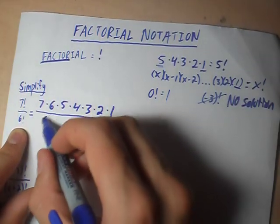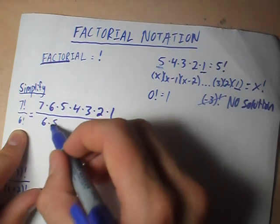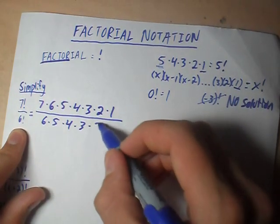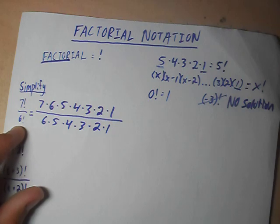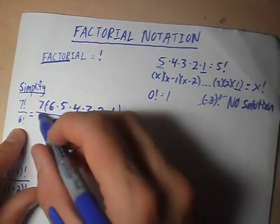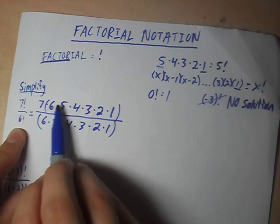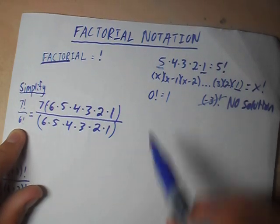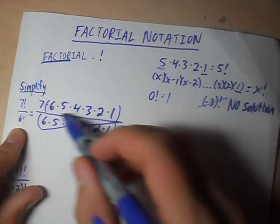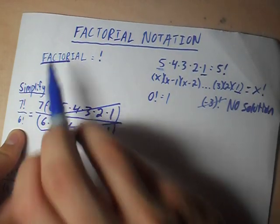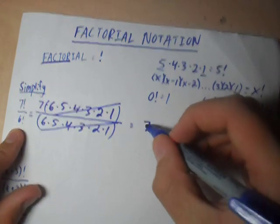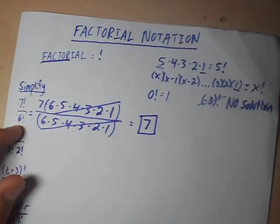In the denominator we're going to have 6 times 5 times 4 times 3 times 2 times 1. Take a look — we've got 6 factorial on the top (6 times 5 times 4 times 3 times 2 times 1) and on the denominator as well. Those can cancel out because they're factors. So we're left with an answer of 7.